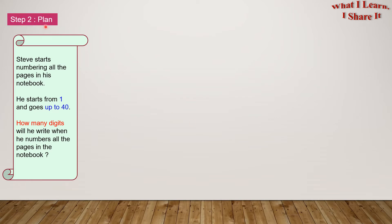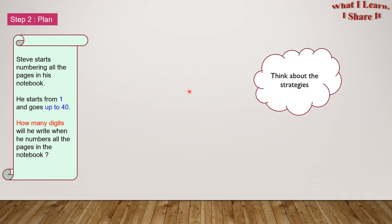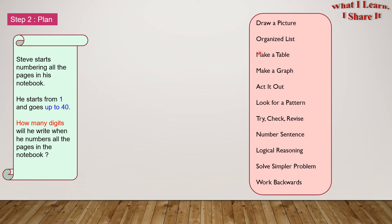Step 2: Plan. Now think about the strategies. The strategies we have used before include: draw a picture, organize list, make a table, make a graph, act it out, look for a pattern, try and check, revise, number sentence, logical reasoning, solve a simpler problem, and work backwards. I'm going to use the solve a simpler problem strategy.